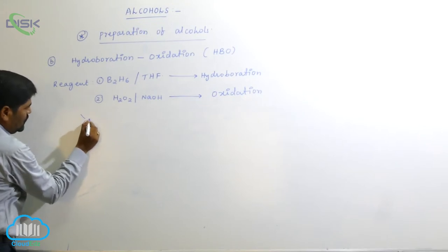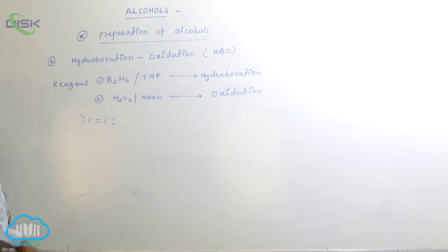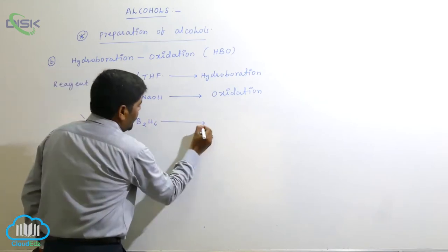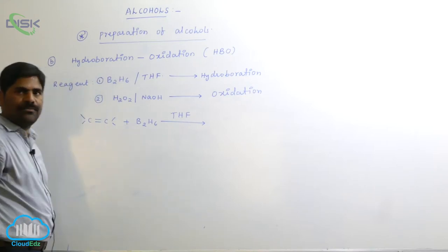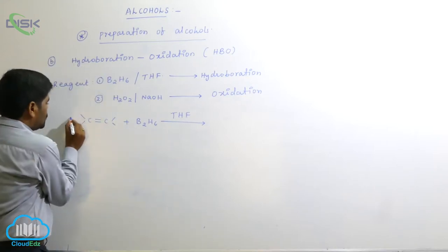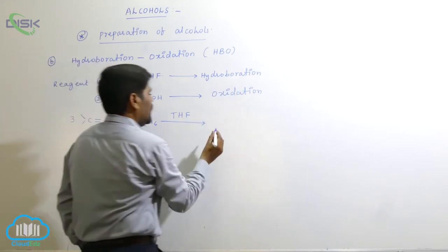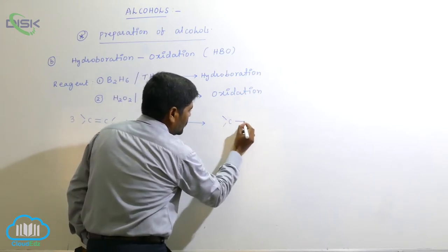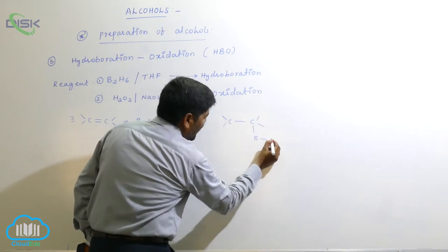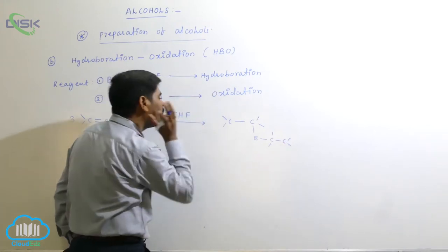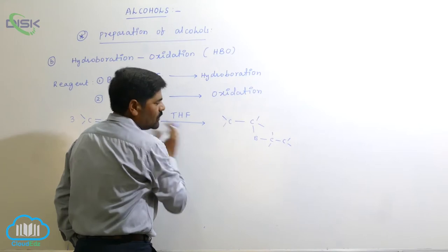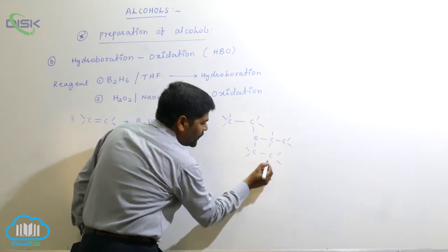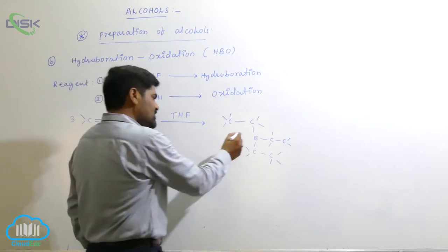For a general example, here is C double bond C. When reacting with diborane B2H6 in tetrahydrofuran (THF) as a solvent, if you are taking 3 moles of alkene, the hydroboration step produces a trialkyl borane structure with boron attached to three carbon chains. This is the hydroboration step.